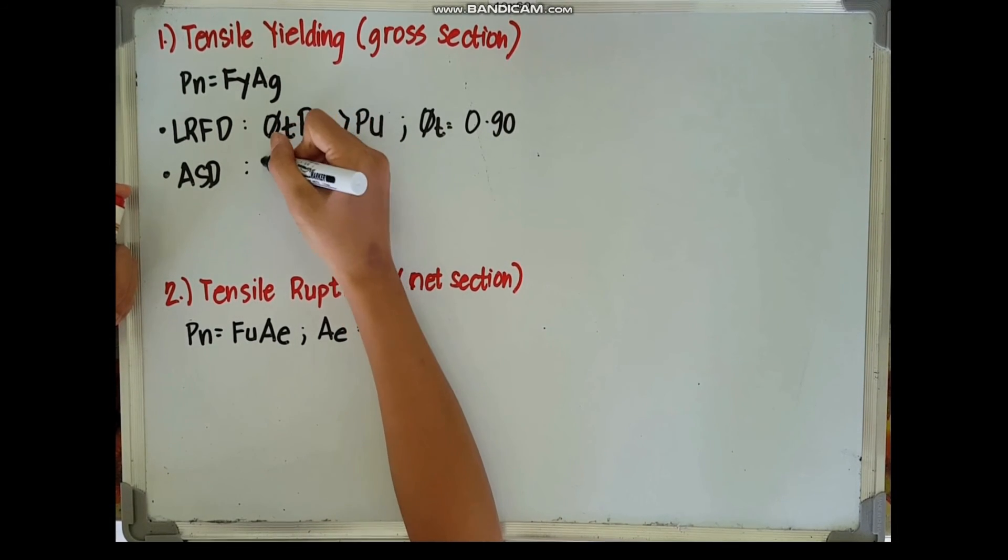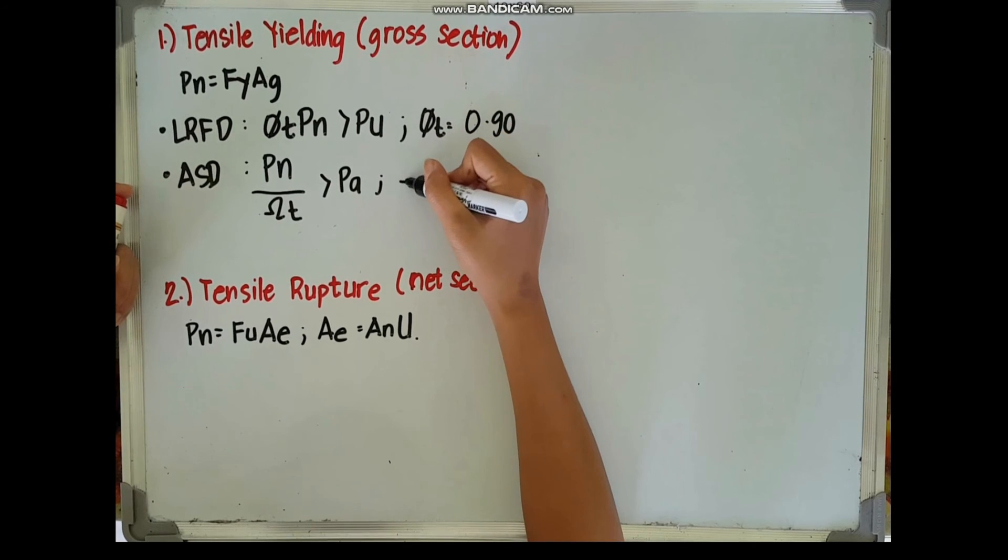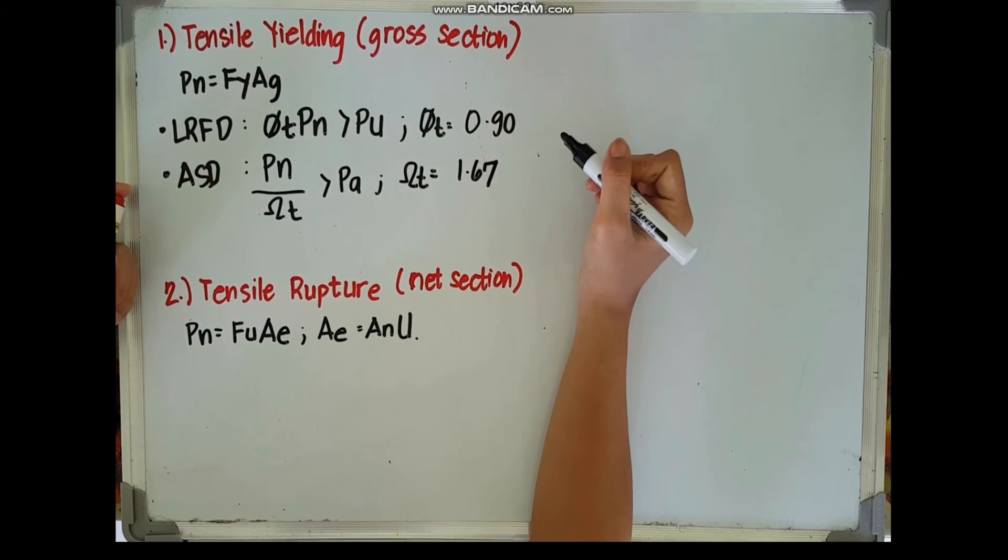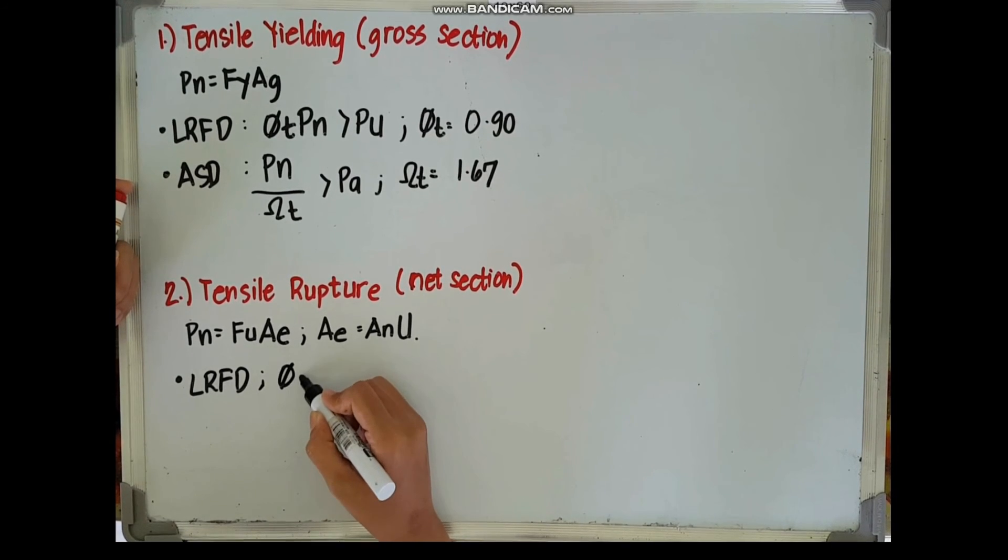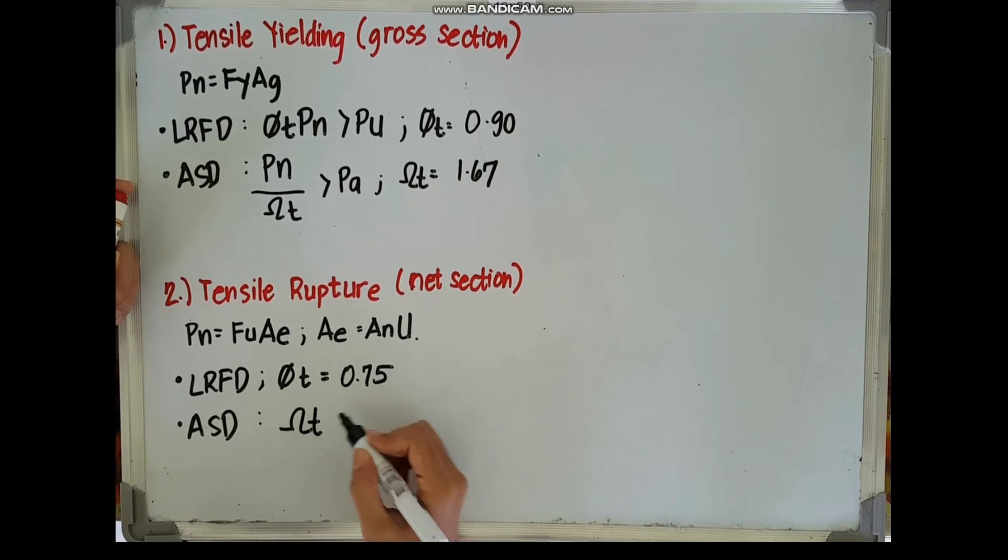And for ASD we will divide Pn over the safety factor for tension omega, and it must be greater than our PA, wherein our omega T is equal to 1.67. For tensile rupture under LRFD, our resistance factor would now be equal to 0.75, and our omega T would be equal to 2.0.